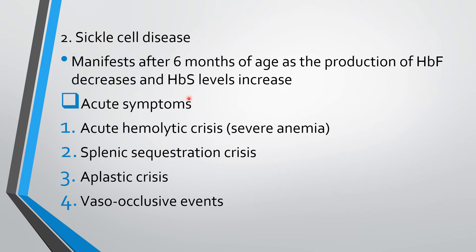The symptoms include acute symptoms. Under acute symptoms, we can see four important crises in a child with sickle cell disease: first, acute hemolytic crisis; second, splenic sequestration crisis; third, aplastic crisis; and fourth, vaso-occlusive events. These are very important.